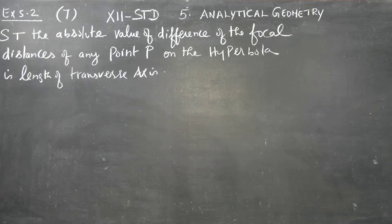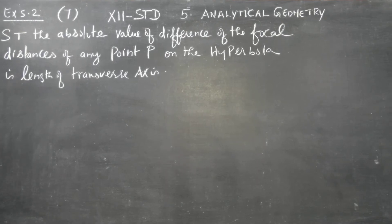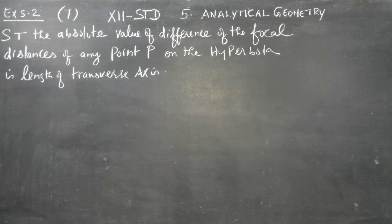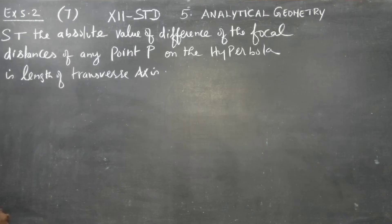Dear 12th standard students, in exercise number 5.2, sum number 7, show that the absolute value of the difference of the focal distances of any point P on the hyperbola is the length of the transverse axis.